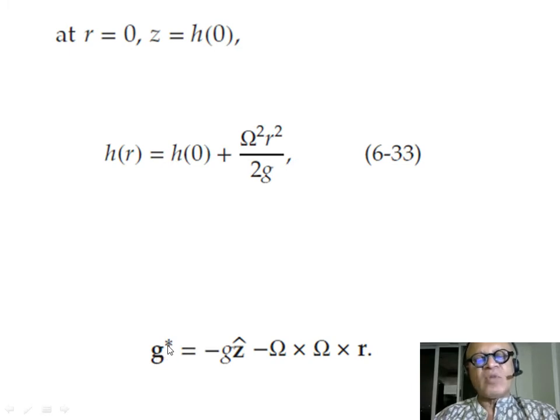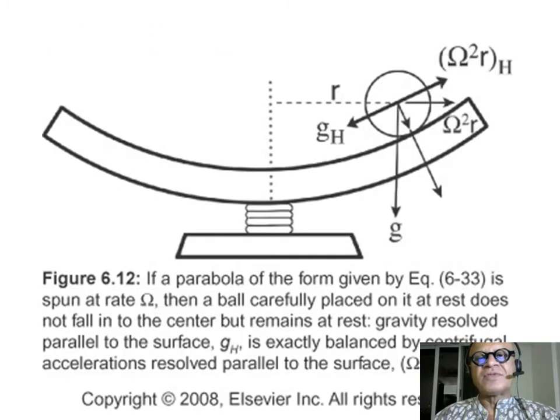So, you can then define a modified gravity g star as minus g g hat, which is our unit vector in the z direction, minus omega cross omega cross r. What's happening here? This force in the tank is on a tilted surface, so it's going to have a component that's vertical.